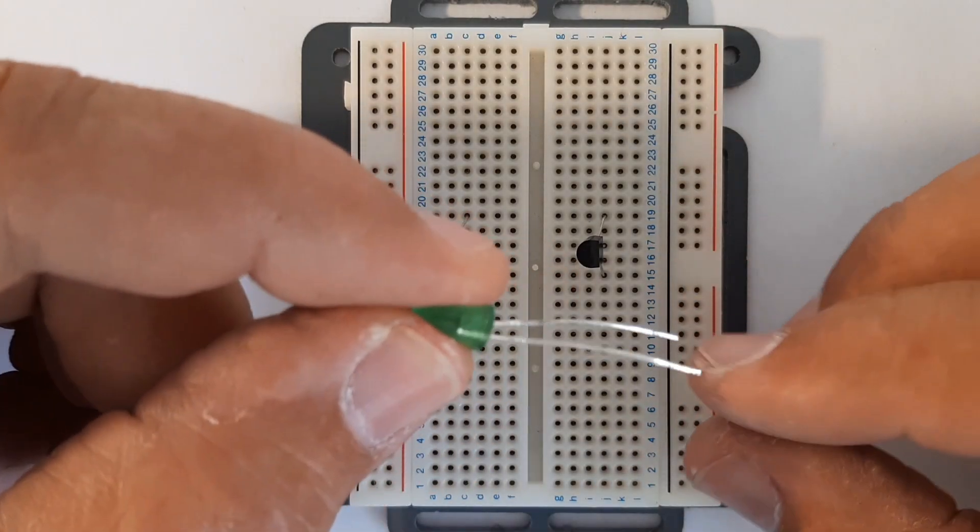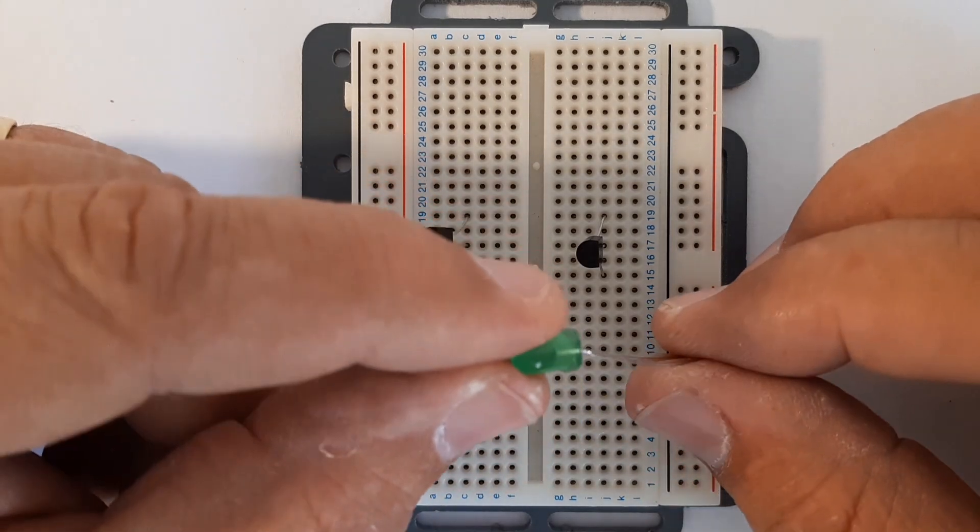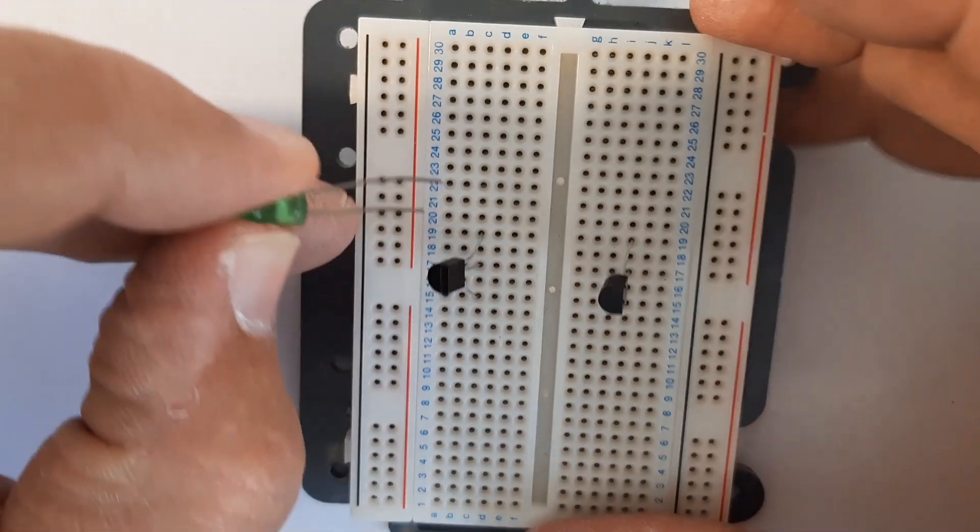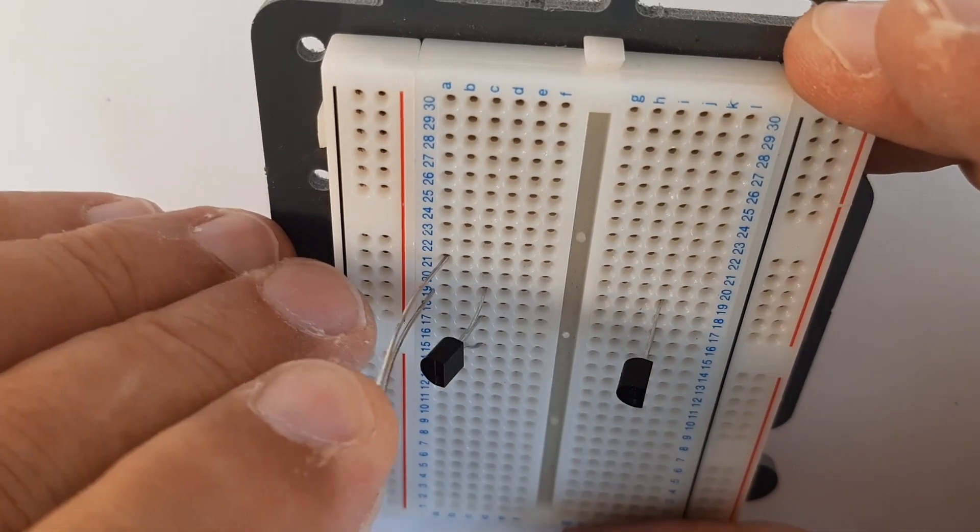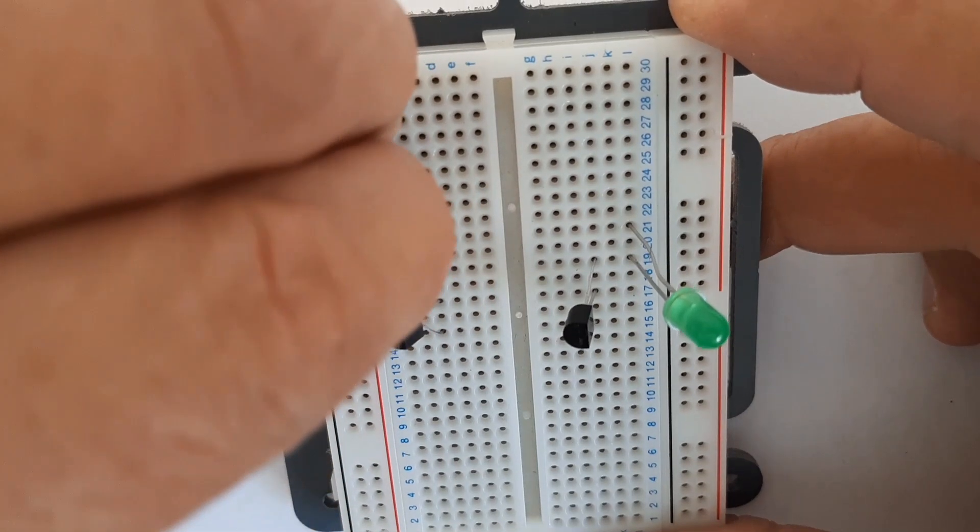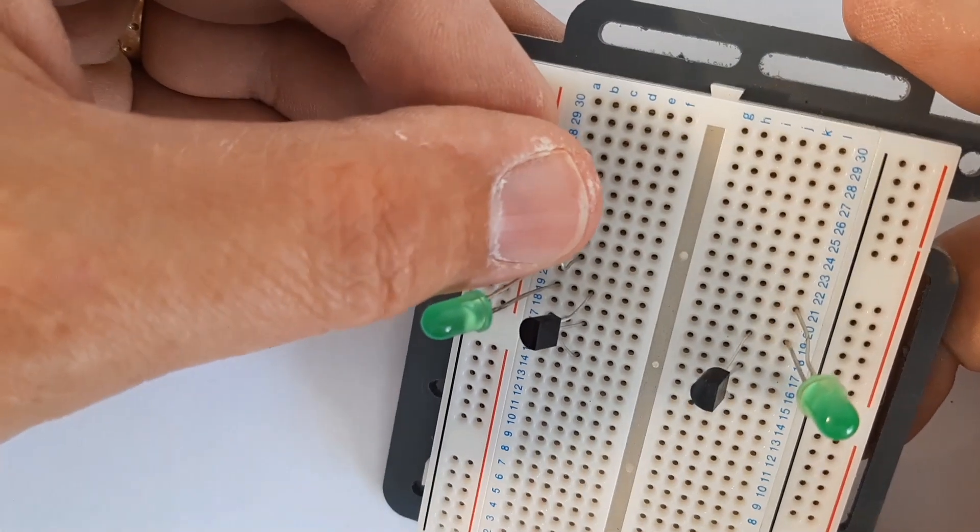I'm going to put these LEDs with the cathode which is the short leg in where the collector leg is in the breadboard. So we're putting those there like that.